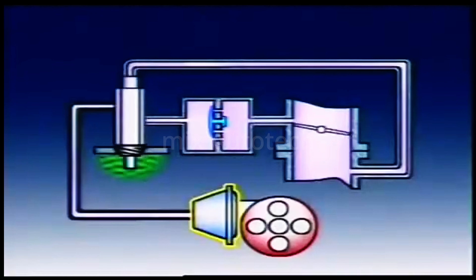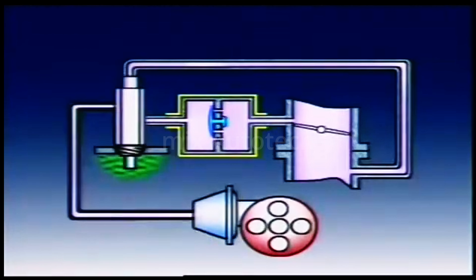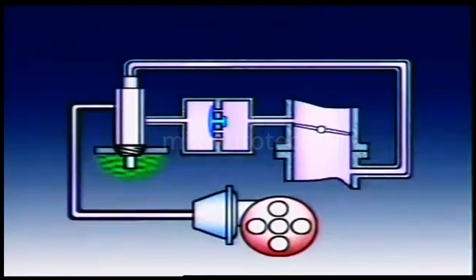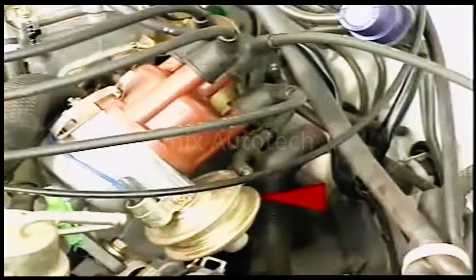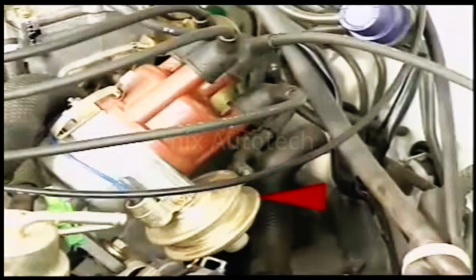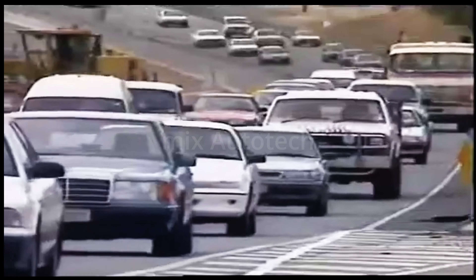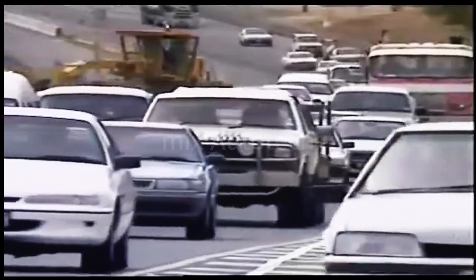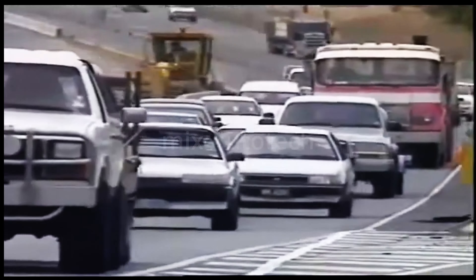Spark control systems use ignition timing to optimize engine output and fuel consumption with minimal emissions. They control vacuum levels to the vacuum advance unit on the distributor. In some designs, vacuum signals are delayed with vacuum valves in the signal line; in other designs, the vacuum signals are sustained. The signals can also be applied to dual diaphragm advance units on some distributors. The degree of control needed depends on many factors, and each application should be considered individually.